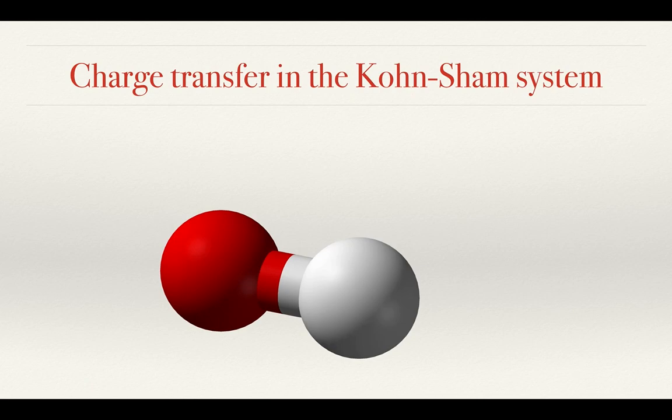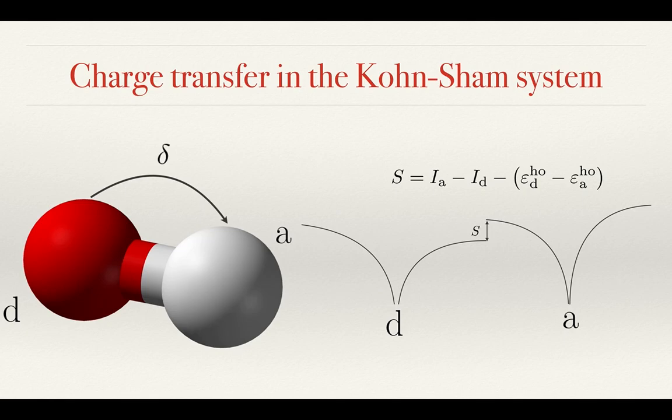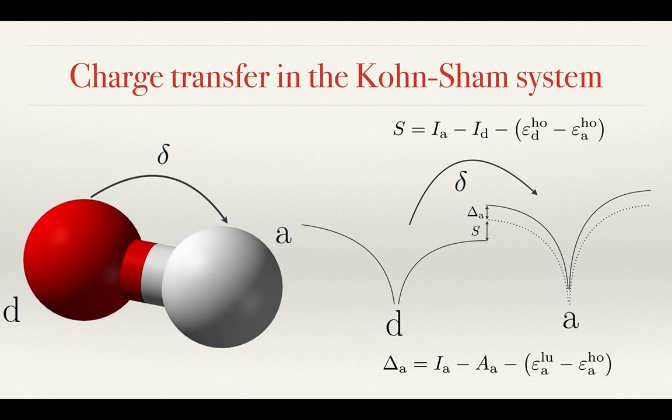What would we expect to happen in the Kohn-Sham system when charge transfer occurs? The ground state Kohn-Sham potential has an interatomic step. When a very small amount of charge is transferred from the donor atom to the acceptor, the acceptor atom's number of electrons surpasses an integer. Hence, it must follow that the acceptor atom experiences a shift in the level of the potential by delta. However, this is a paradoxical conclusion, because the interatomic step height, S, must remain the same upon the transfer of an infinitesimal amount of charge.